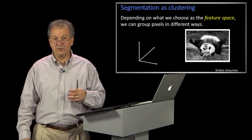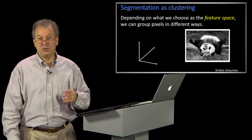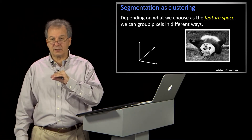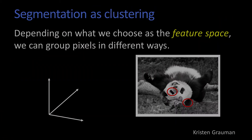You might ask, can I do something smarter? Yes, you can include not only clustering in intensity, but also cluster on position. For example, here we have this little part of the black ear and this dark part of the eye, and you might want them to be in separate clusters.